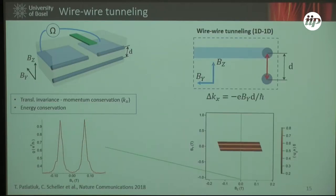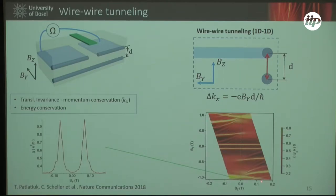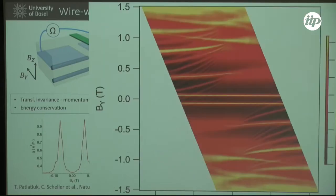We can repeat this measurement not only as a function of the magnetic field in the y-direction — perpendicular to the plane spanned by the two wires — but also apply a magnetic field perpendicular to the 2D plane of the quantum well. This Bz field is very interesting: if we look at the data as a function of both Bz and By, we see a very rich structure in modes.